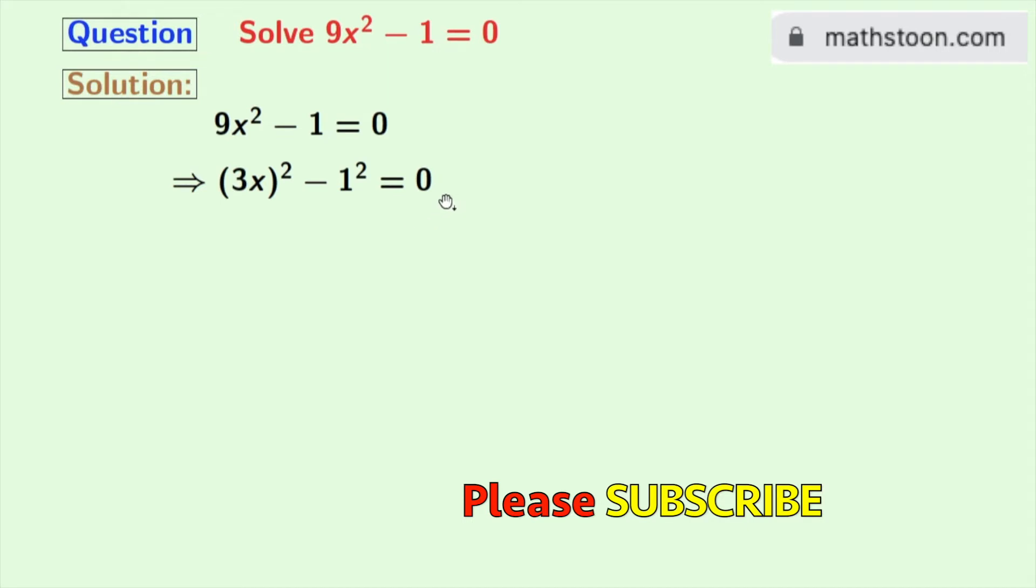Now if we look carefully, we can see that the left hand side is in the form of a² - b², where a is 3x and b is 1. So we can apply the formula of a² - b² in this equation.